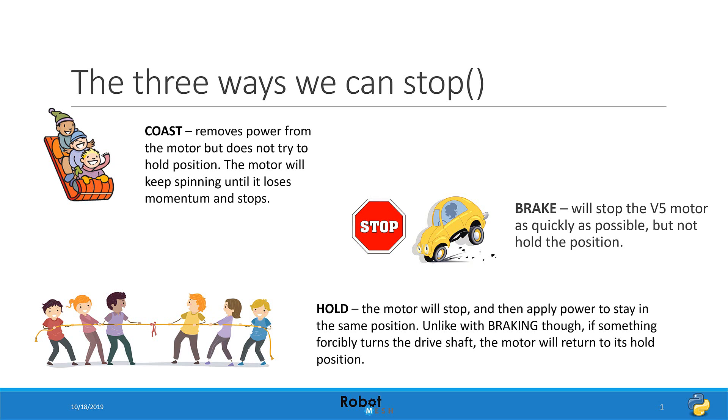Our third option is to hold the motor in position. This command is similar to braking but goes a step further to lock the motor in place. That is if we are using the hold command and we try and turn the wheel that is attached the motor will try to hold the position. Let's take a look at some examples to see how these various commands work.